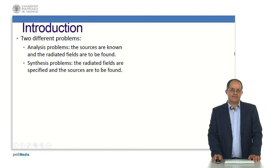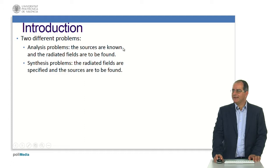When we are dealing with antennas, what is the first problem we have to tackle? Well, we have two different kinds of problems. First of all, we have an analysis problem where the sources are known and I want to find the radiated fields. The second one is a synthesis problem where the radiated fields are known, but I want to find which are the sources.